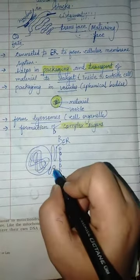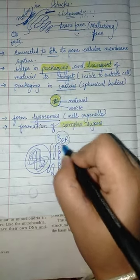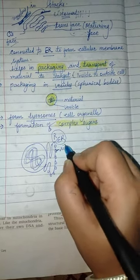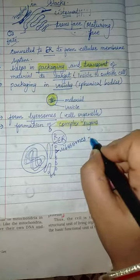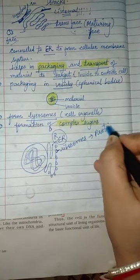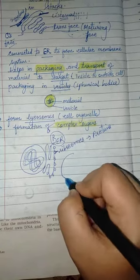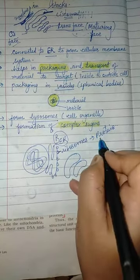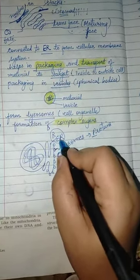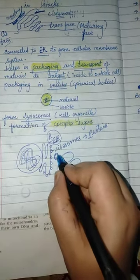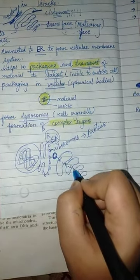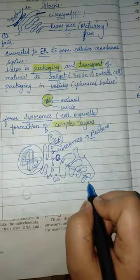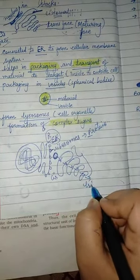If there are ribosomes on the endoplasmic reticulum, it is called the rough endoplasmic reticulum. The ribosomes on the RER perform protein synthesis. So the rough endoplasmic reticulum synthesizes proteins, which are then passed to the Golgi apparatus for packaging.